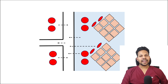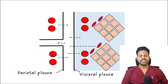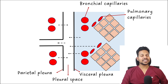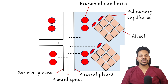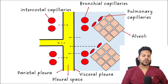Let's start with the anatomy and the development of pleural fluid. Here we have the parietal pleura and the visceral pleura, and the space enclosed between them is the pleural space. On the inner side we have the bronchial capillaries and the pulmonary capillaries, the alveoli and the interstitium. On the side of parietal pleura we have the intercostal capillaries. All these capillaries surrounding the pleura result in the development of pleural fluid, which is drained by the lymphatics in the parietal pleura.